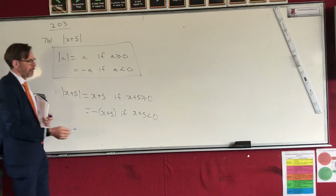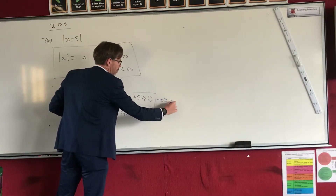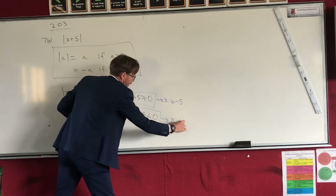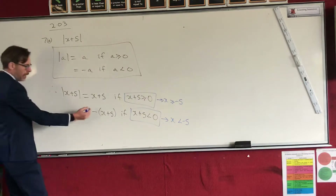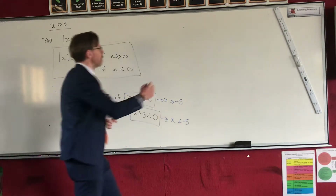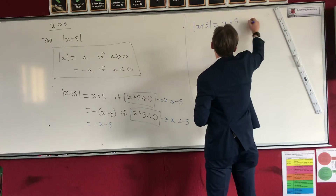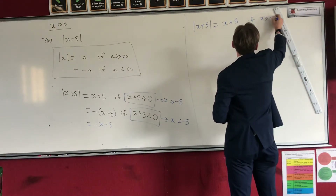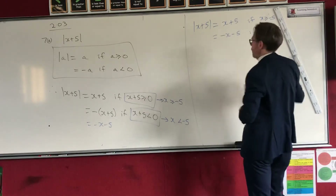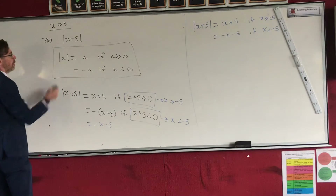In the back of the book, they will tidy this up a little bit. x plus 5 bigger than or equal to 0 is really x bigger than or equal to negative 5. And for the other case, x is less than minus 5, and they might say that's minus x minus 5. So in the end, the textbook may write: absolute value of x plus 5 equals x plus 5 if x is bigger than or equal to negative 5, and equals minus x minus 5 if x is less than minus 5. All we did is replace a with x plus 5 from the question into the definition.